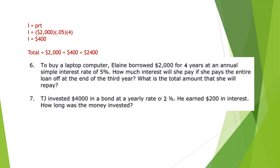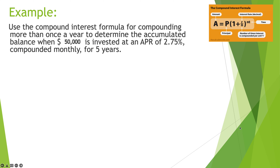Next: TJ invests $4,000 in a bond at a yearly rate of 2% and earns $200 in interest. This shows how the formula can be used both ways — like converting Celsius to Fahrenheit. So 200 = 4,000 × 0.02 × t, meaning 200 = 80t, and dividing by 80 gives t = 2.5 years.